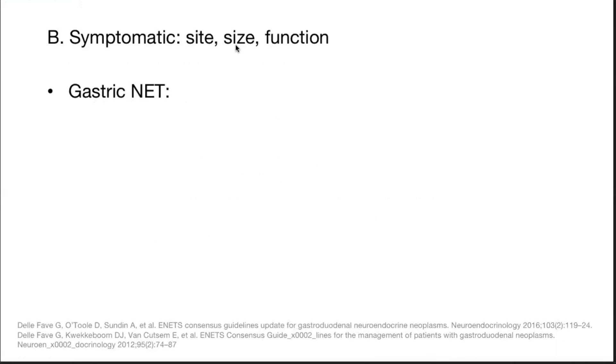Secondly, they can present as a symptomatic pathology based on the site, size, and function. So gastric neuroendocrine tumors — there are three types: type 1, type 2, and type 3.